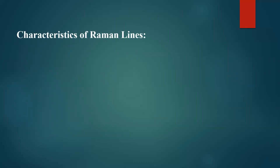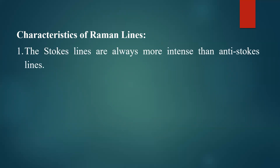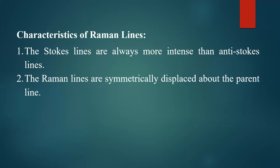Let us now take the characteristics of Raman lines. Stokes lines are always more intense than anti-Stokes lines. The Raman lines are symmetrically displaced about the parent line — Stokes and anti-Stokes lines are symmetrically placed on both sides. If four lines are observed in the Stokes branch, four lines are also observed in the anti-Stokes branch. Stokes lines have higher wavelength and higher intensity compared to the anti-Stokes lines.